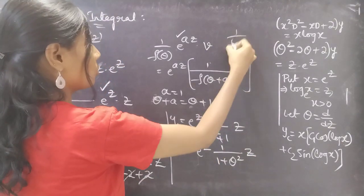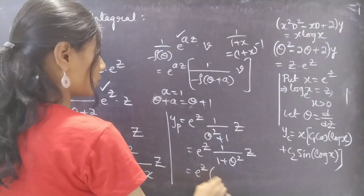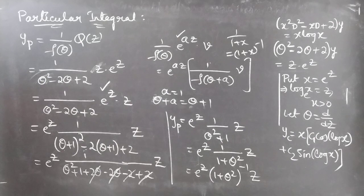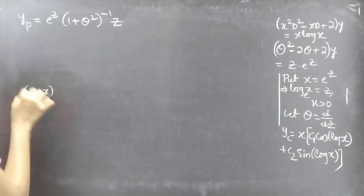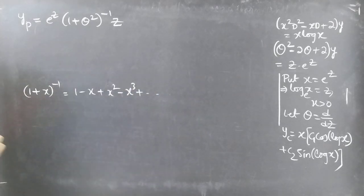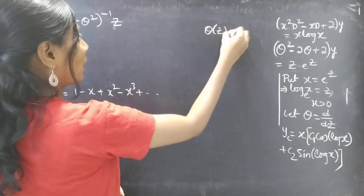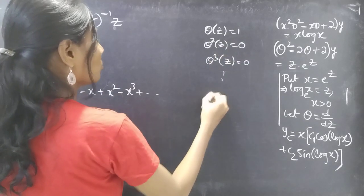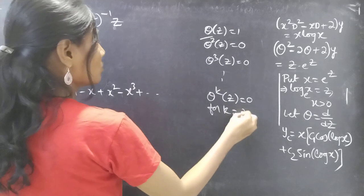We write 1 over (1 plus theta squared) as (1 plus theta squared) to the power of negative 1, which is of the 1 over (1 plus x) form. We expand using the binomial series: (1 plus x) to the negative 1 equals 1 minus x plus x squared minus x cubed plus so on. So (1 plus theta squared) inverse equals 1 minus theta squared plus theta to the 4 minus theta to the 6 plus so on. We note that theta of z equals 1, theta squared of z equals 0, and theta to the k of z equals 0 for k equal to 2, 3 and so on.